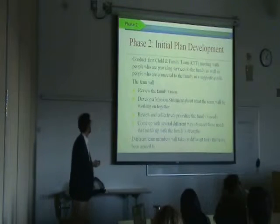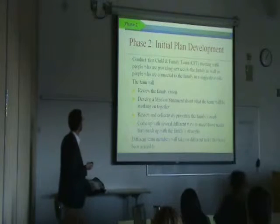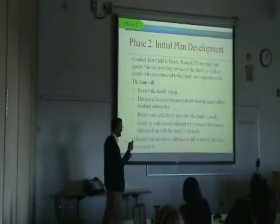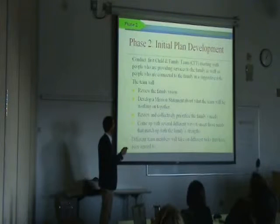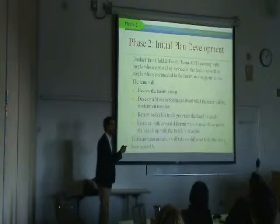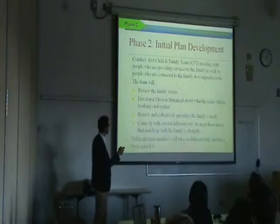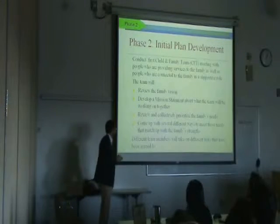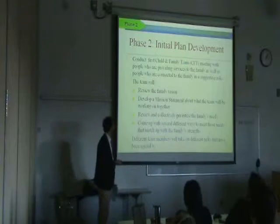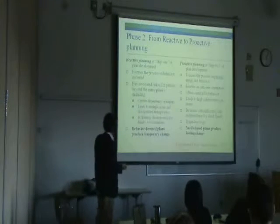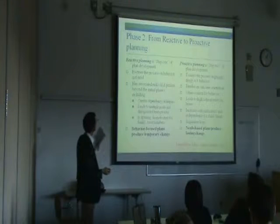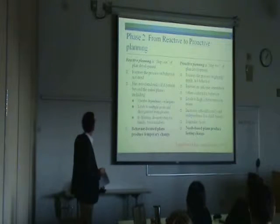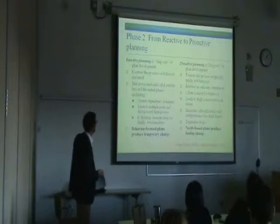In phase two, you're conducting your first child and family team meeting. The team reviews the family vision, develops a mission statement, reviews and collectively prioritizes the family's needs, then brainstorms different ways to meet those needs that match up with the family's strengths. The different team members take on different tasks that have been agreed to. A couple of key points: you're really moving from reactive planning to proactive planning and developing needs-based plans.